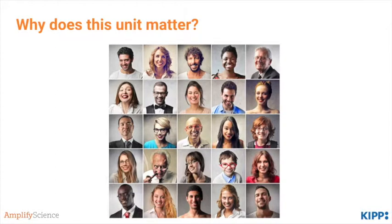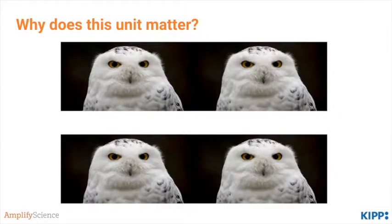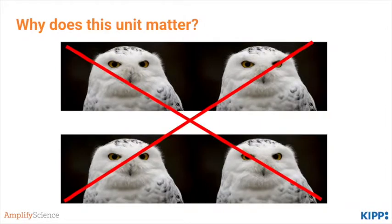This unit is important because it's students' first experience understanding the foundations of inheritance. Why is it that we look the way that we do and why doesn't everyone look the same? There's all sorts of variation with traits in the human species, and it's important students understand. There's also variation of traits within animal species. For example, students might have the misconception that all snowy owls are exactly identical, when in fact they have different spot patterns on their fur, slightly different behaviors, and slightly different variations in other traits such as beak size.